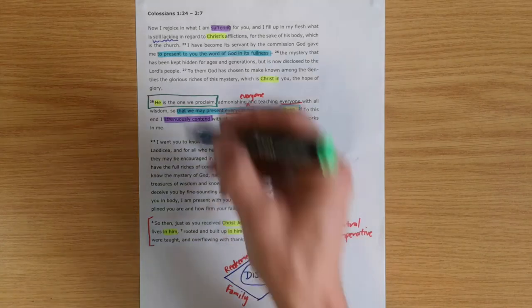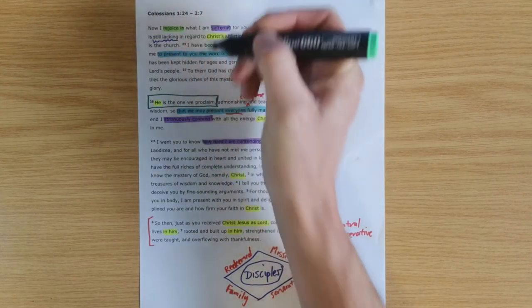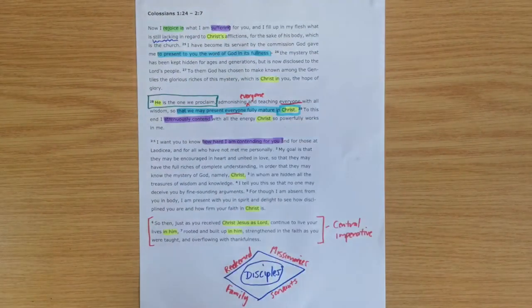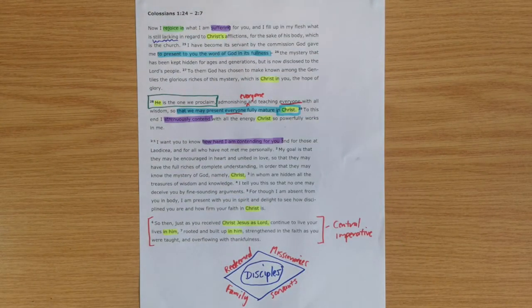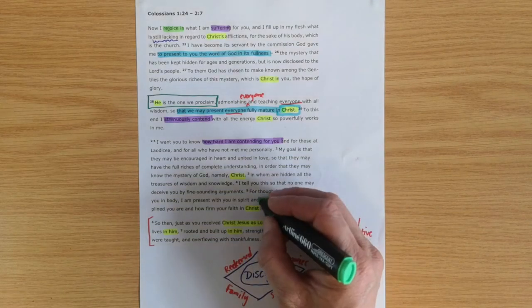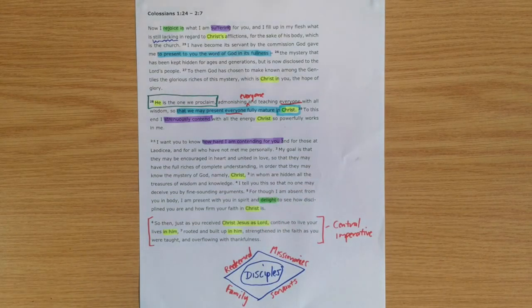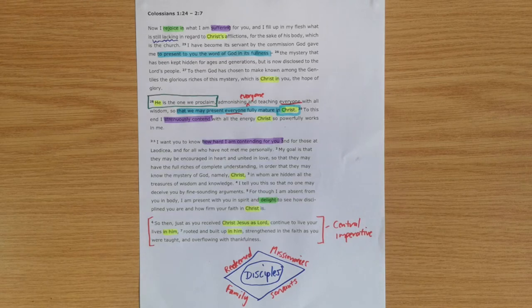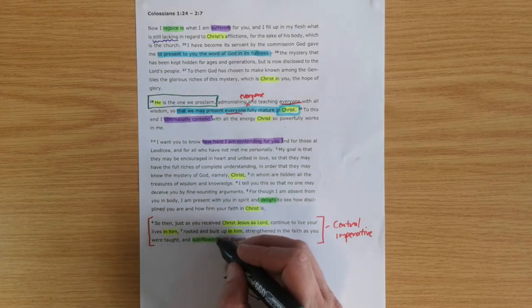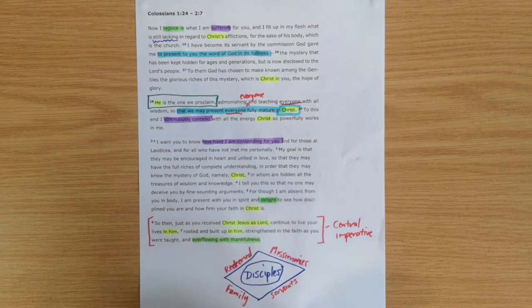Paul starts by saying, 'Now I rejoice.' He rejoices in this hard work, the suffering, the strenuously contending for them. In chapter 2, verse 5, he says, 'I delight to see how disciplined you are and how firm your faith in Christ Jesus is.'